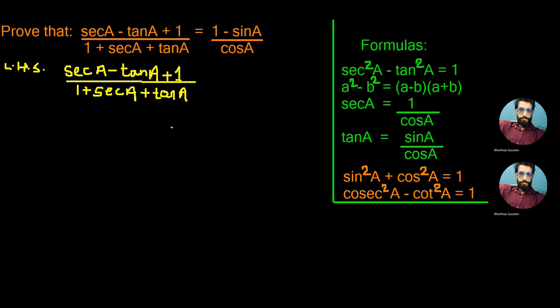Namaste. Today we are dealing with one of the most important questions from the trigonometric section, where we have LHS as sec a minus tan a plus 1, whole divided by 1 plus sec a plus tan a, and on the right side we need to prove 1 minus sin a, whole divided by cos a.